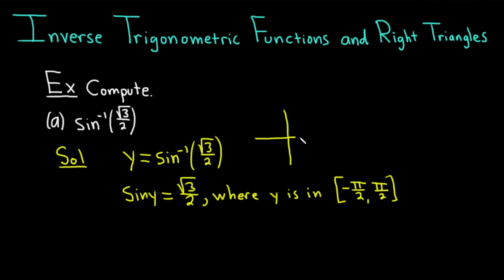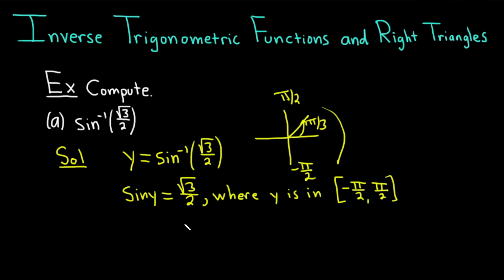Then we can just use our trig knowledge. Here's the unit circle. Sine of what equals √3/2? Well, π/3. Here's π/3, here's π/2, here's negative π/2. We're in that range, and π/3 is within it. So y is equal to π/3.